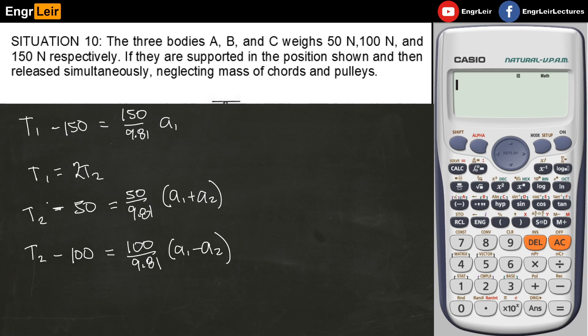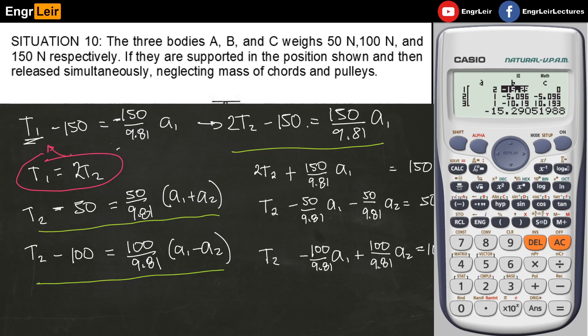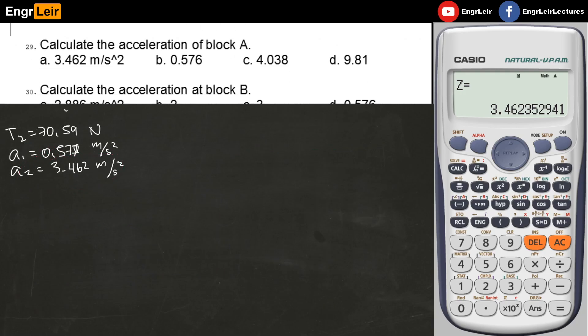The easiest approach is to first replace T2 by substituting the second equation into the others. This gives us 3 equations. Arrange them and use the calculator to solve. Type in the coefficients. We get T2 = 70.59 newtons, A1 = 0.577, and A2 = 3.462.